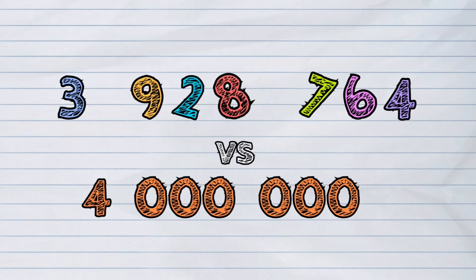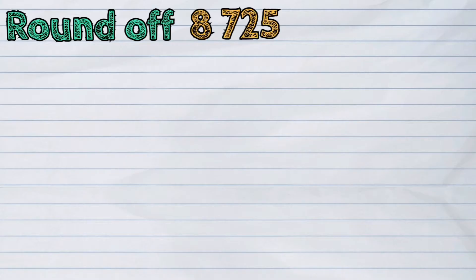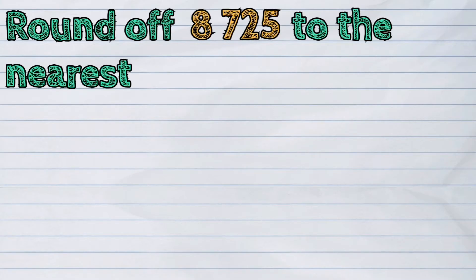Now, how do we do it? Let's have an example. We will round off 8,725 to the nearest thousand.